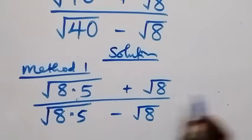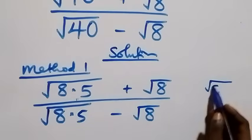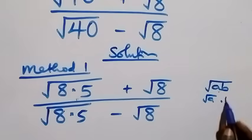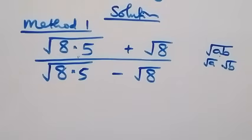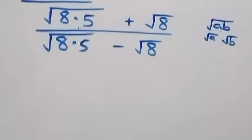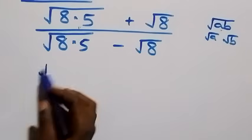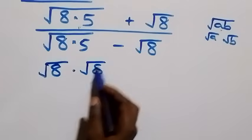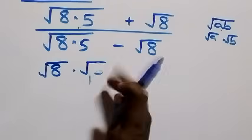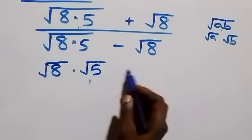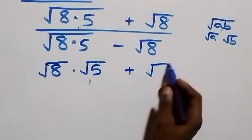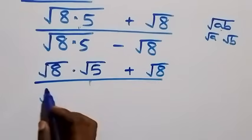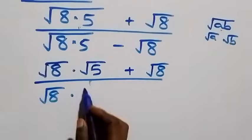What we have here follows: when we have root of a times b, we can rewrite this as root a times root b. So this becomes root eight times root five, plus root eight, over root eight times root five.